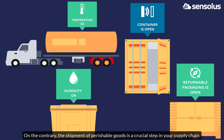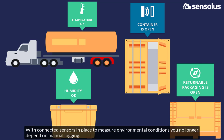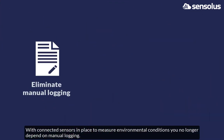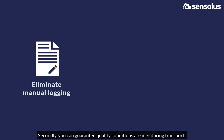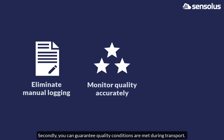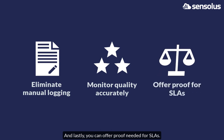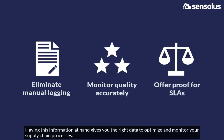On the contrary, the shipment of perishable goods is a crucial step in your supply chain. With connected sensors in place to measure environmental conditions, you no longer depend on manual logging. Secondly, you can guarantee quality conditions are met during transport. And lastly, you can offer proof needed for SLAs. Having this information at hand gives you the right data to optimize and monitor your supply chain processes.